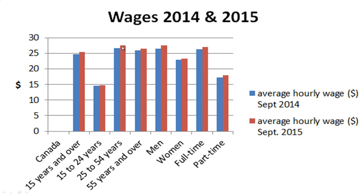There is a slight dip between the 25 to 54 group and the 55 and over group — so wages go down slightly for those senior workers. The data also breaks down by men and women, and you can notice the gender difference: men still do earn more than women — that's what the statistics show. There are also full-time and part-time workers shown, and you'd expect full-time workers to be making a higher hourly wage. Part-time would probably include a lot of those 15 to 24 workers as well.